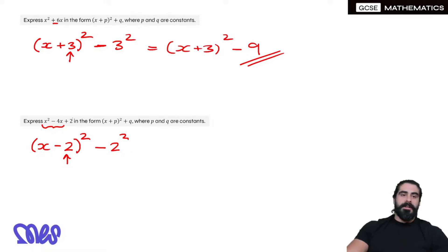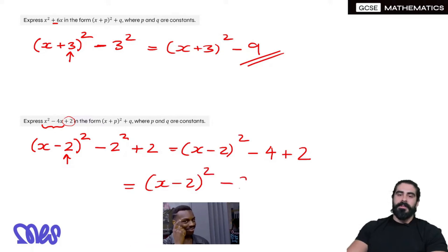Now remember, there was this plus 2. We don't complete the square on that, but it does need to continue on. So we continue that plus 2 on at the end. Then we simplify, and we're basically done. So we have (x - 2)² - 4 + 2, which is (x - 2)² - 2.